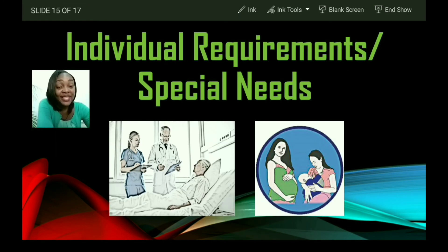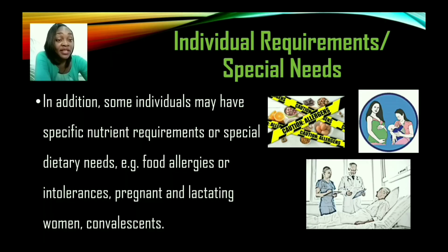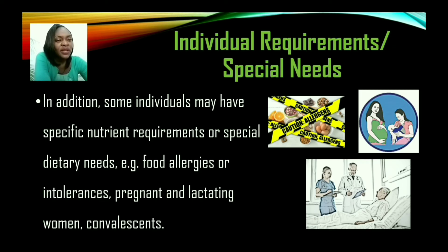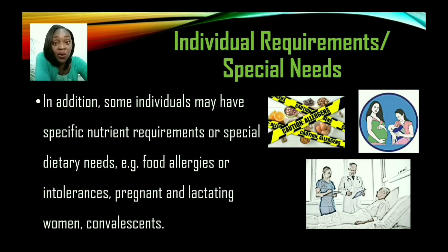Some individuals may have specific nutrient requirements or special dietary needs — for example, food allergies or intolerances, pregnant and lactating women, and also convalescents. When it comes to food allergies or intolerances, have you ever heard of lactose intolerance? Those persons may not be able to digest lactose, so they may have to get their milk source from plant sources — they may have almond milk or soy milk.